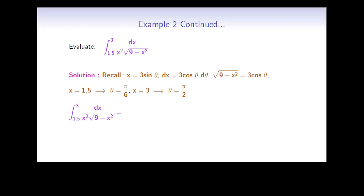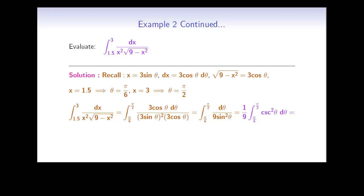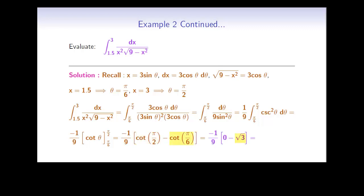Inserting everything into the original integral, the new limits are π/6 and π/2, dx becomes 3 cos theta dθ, x is replaced by 3 sine theta, and the square root of 9 minus x² equals 3 cos theta. After simplification, this becomes the integral of dθ over 9 sin² theta, or equivalently (1/9) times the integral of cosecant² theta dθ. The integral of cosecant² theta is negative cotangent theta, so evaluating gives cotangent(π/2) minus cotangent(π/6), which equals 0 minus √3, giving a final answer of √3 over 9.